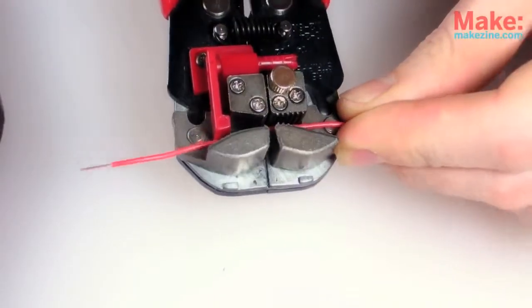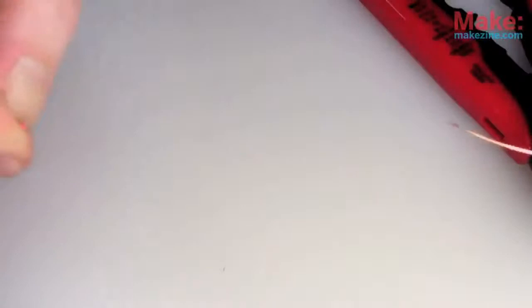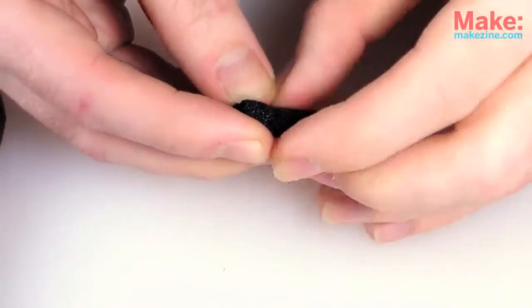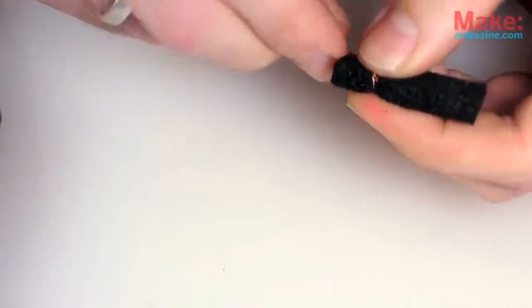I'll strip 1-2 inches of insulation from the end of a foot-long piece of wire, run that through and around the foam a few times, till it's nice and secure.